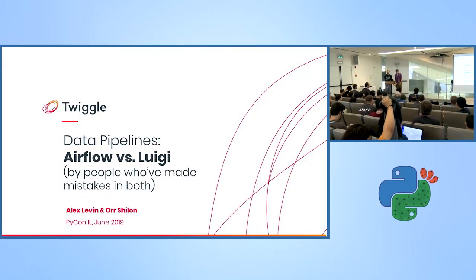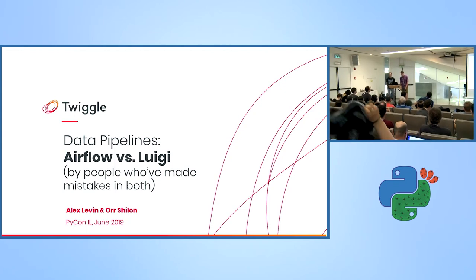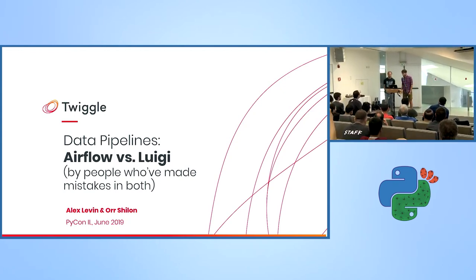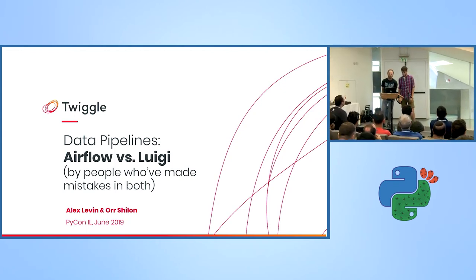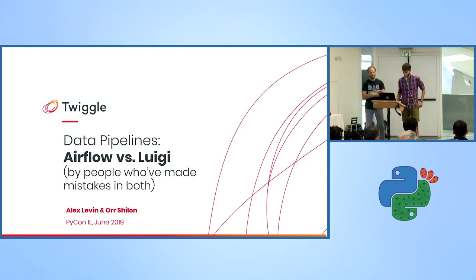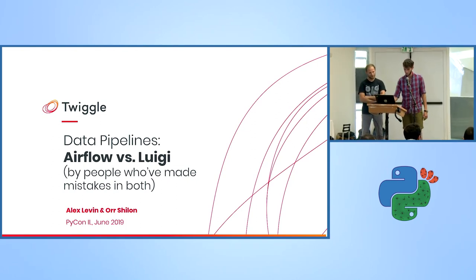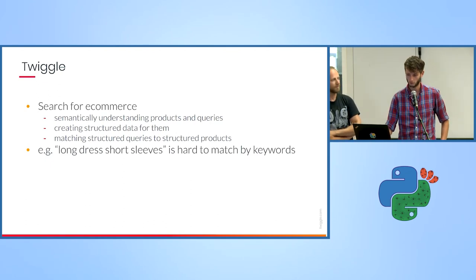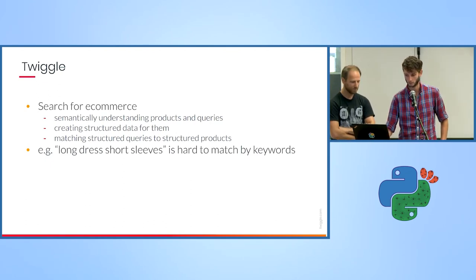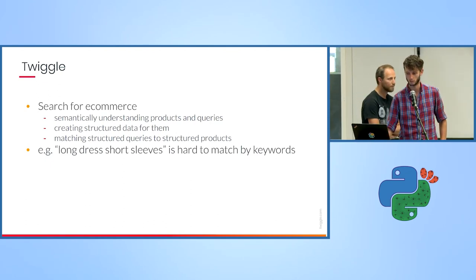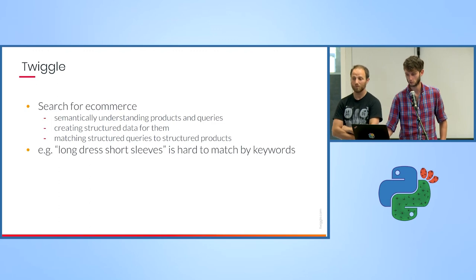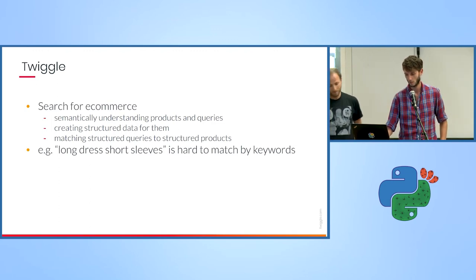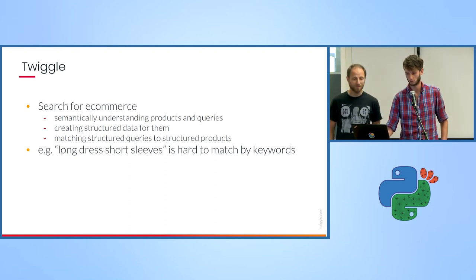Hey everyone, thank you for coming to the last talk in the PyData track. I'm Ol and this is Alex and we're from Twiggle. Today we're going to be talking about data pipelines. Twiggle does search for e-commerce by semantically understanding products and queries. We create structured data for them, and our customers — large e-commerce websites — match those structured queries to structured products to create relevant results.